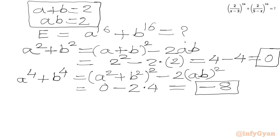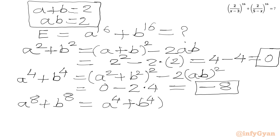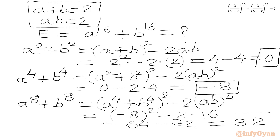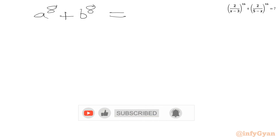Then, a to the 8th plus b to the 8th equals (a to the 4th plus b to the 4th) squared minus 2(ab) to the 4th. Substituting: (minus 8) squared minus 2 times 2 to the 4th equals 64 minus 2 times 16 equals 64 minus 32 equals 32. So a to the 8th plus b to the 8th equals 32.